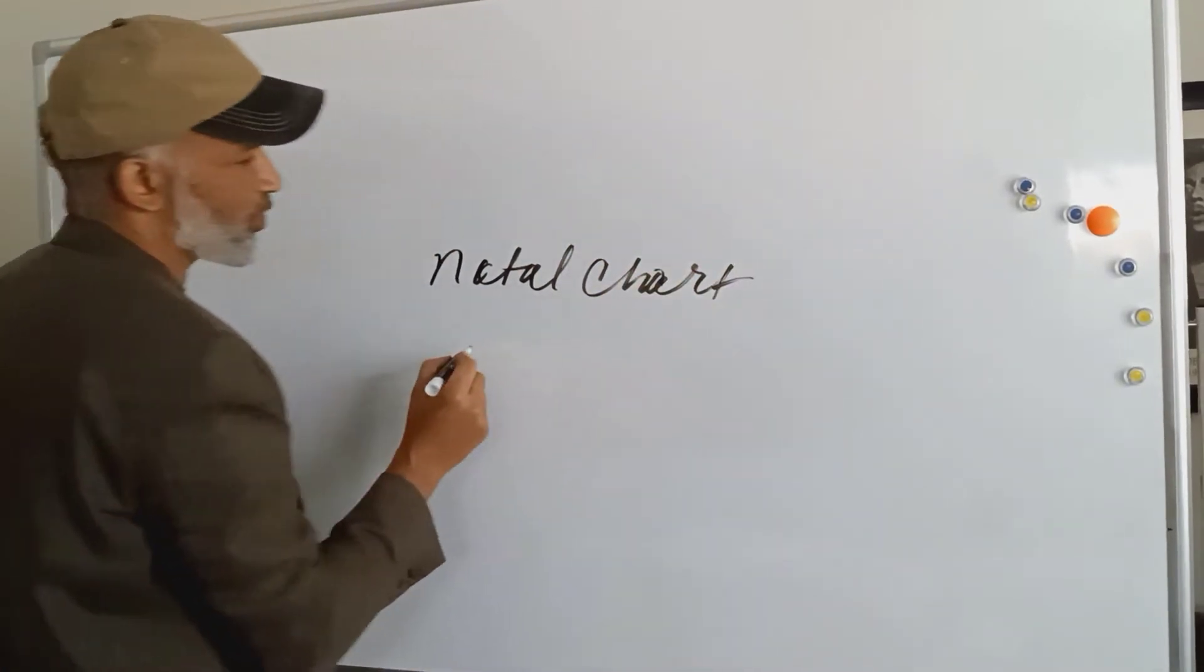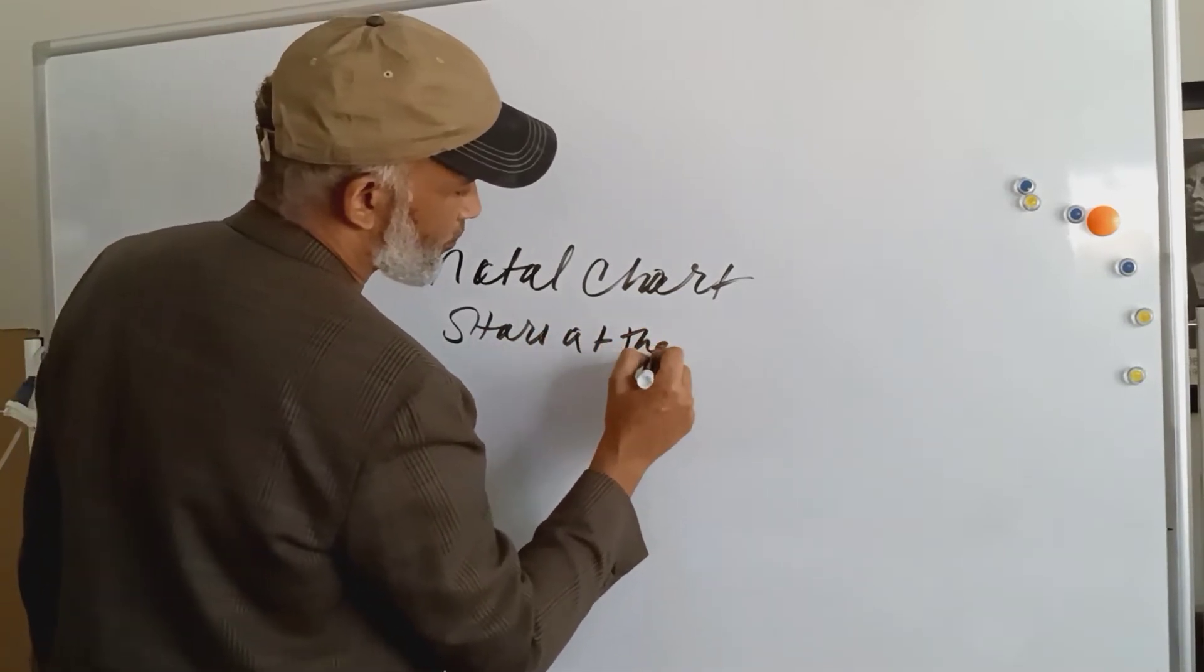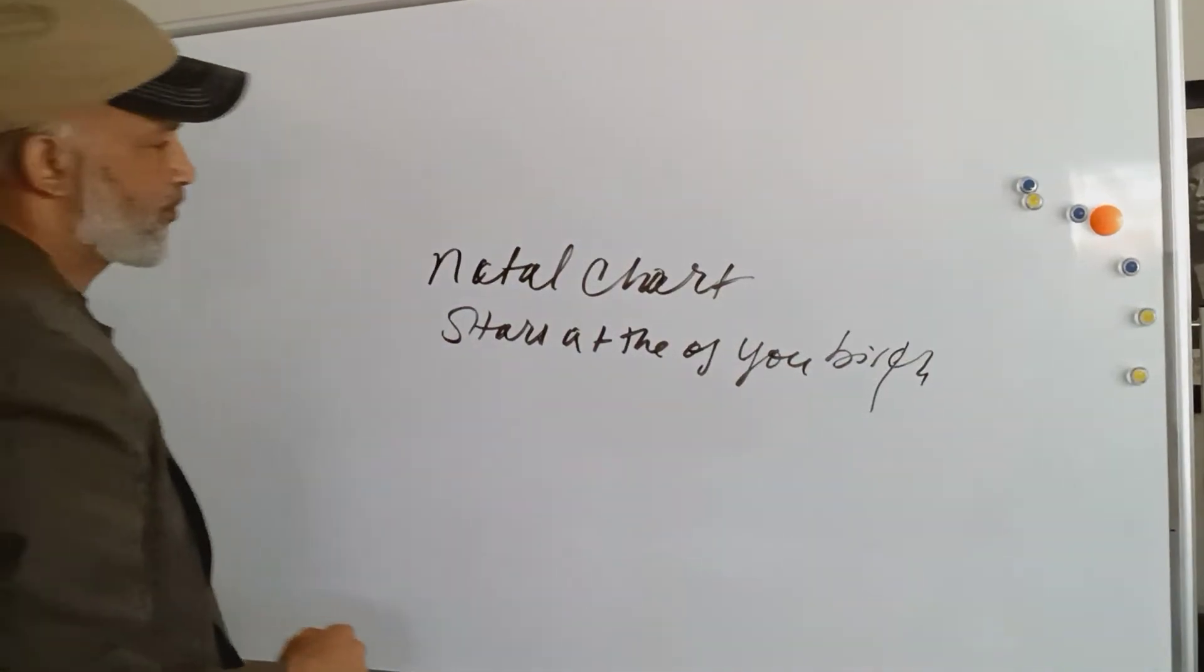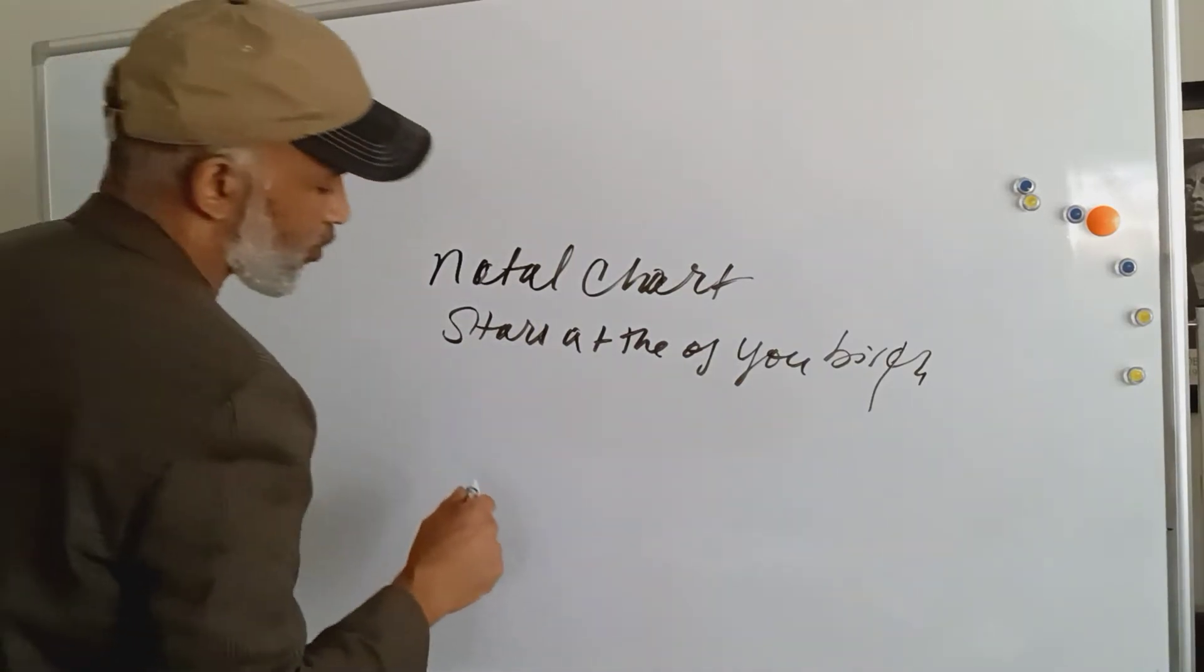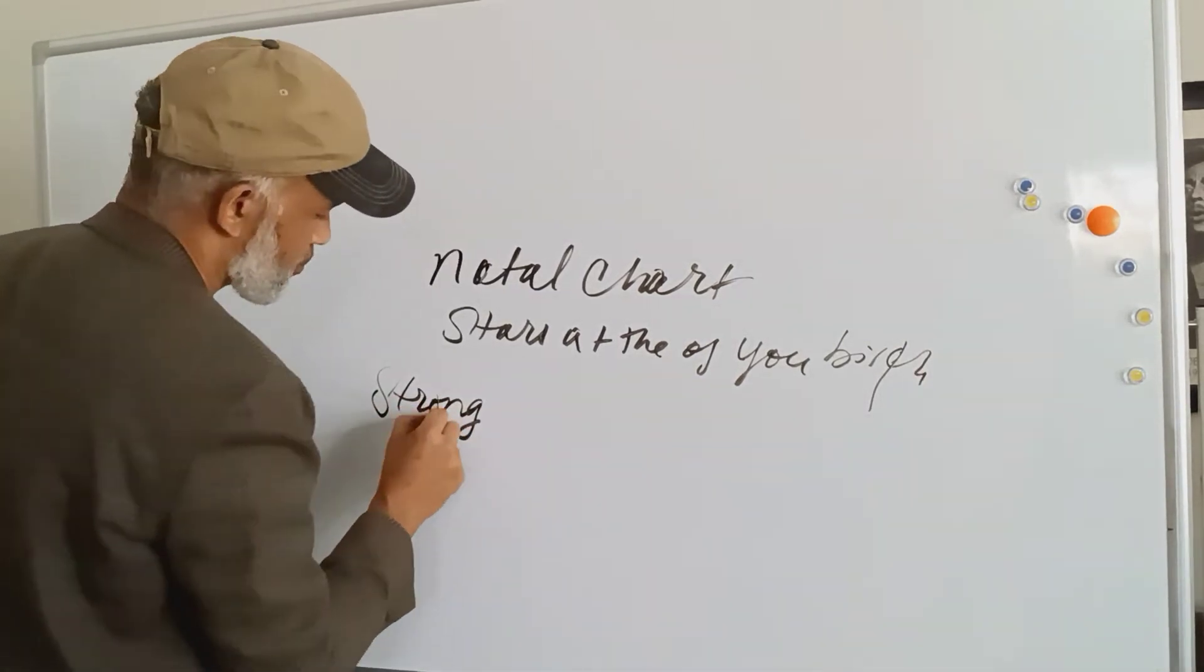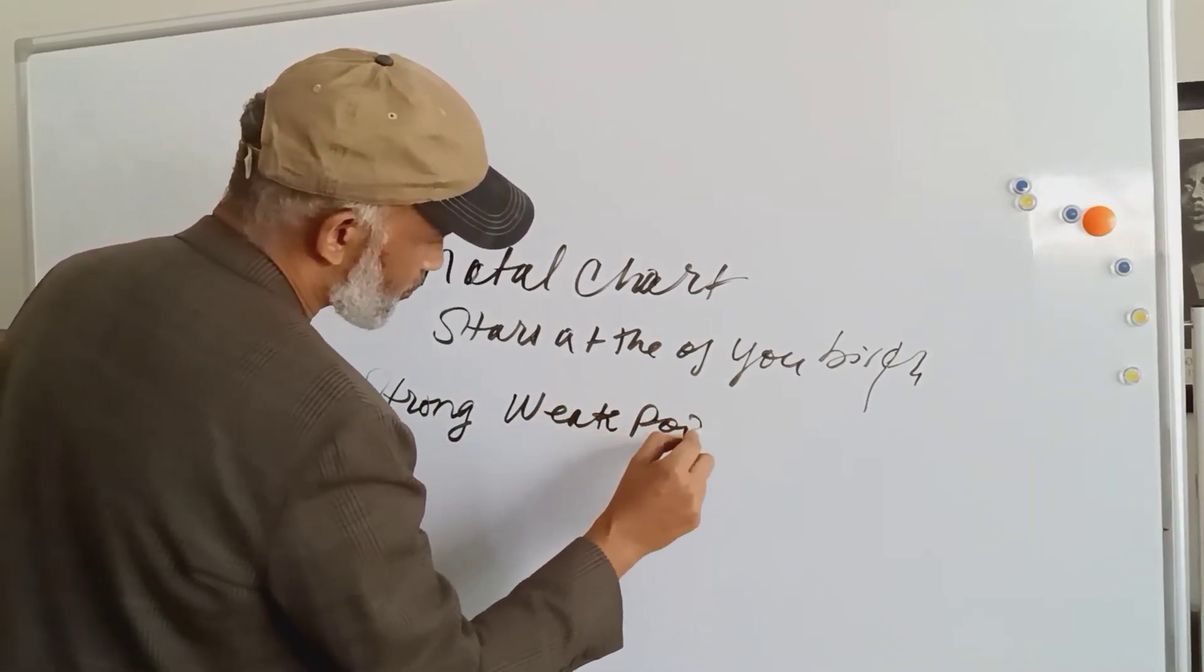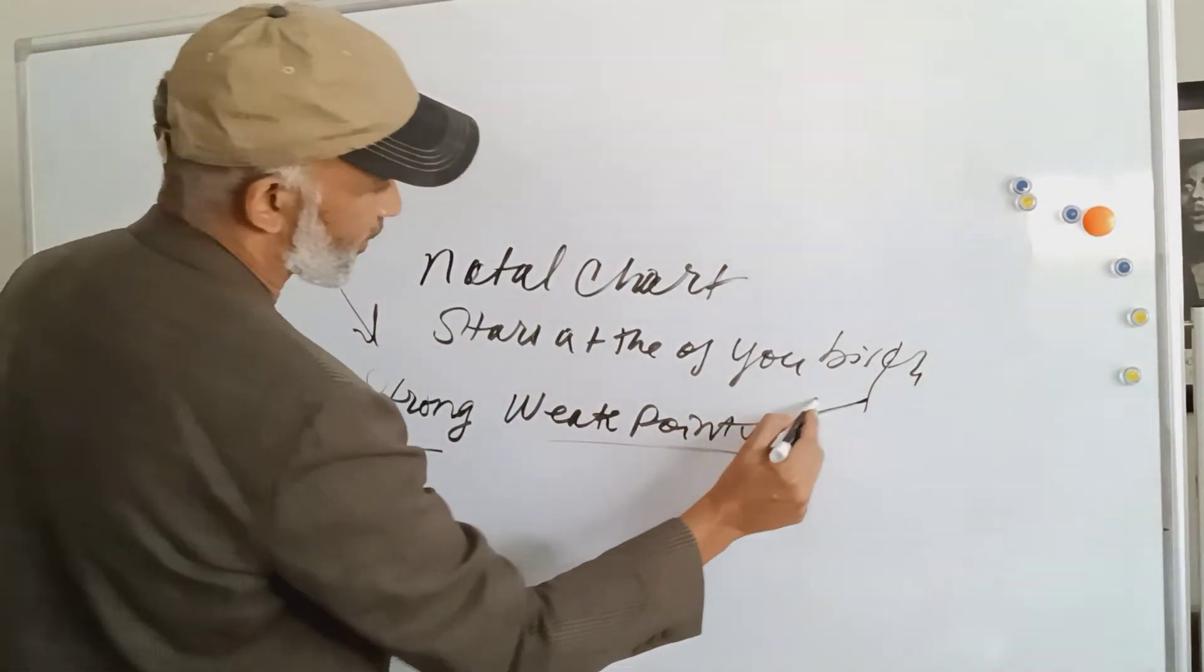This charts all the stars at the time of your birth. The natal chart will show you your strong and your weak points. And this is important to know because some planets give you strong points and some planets are weak points.